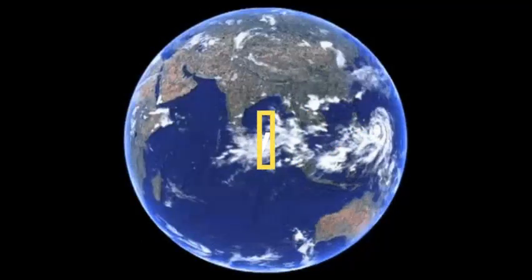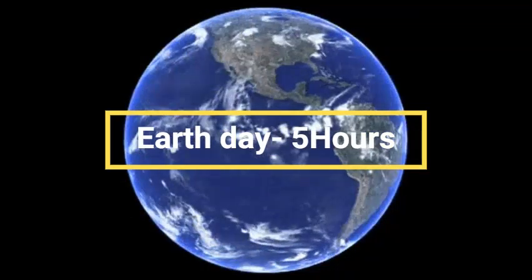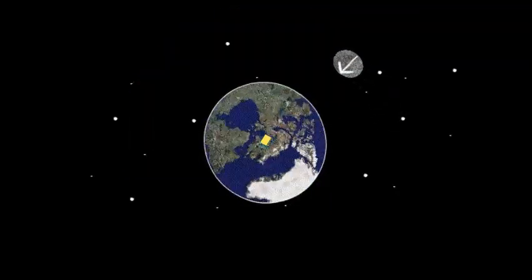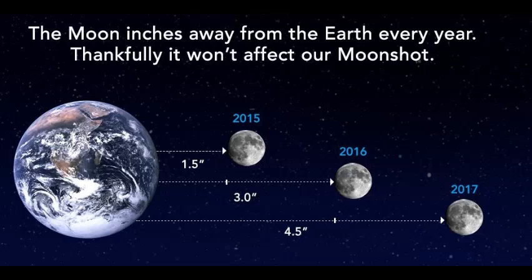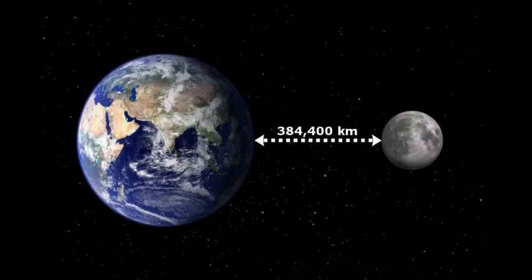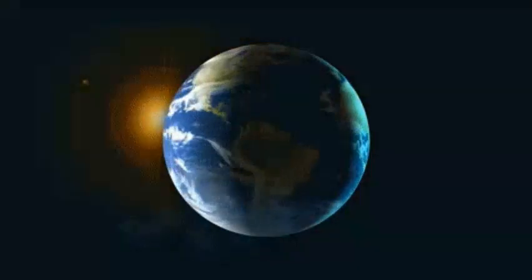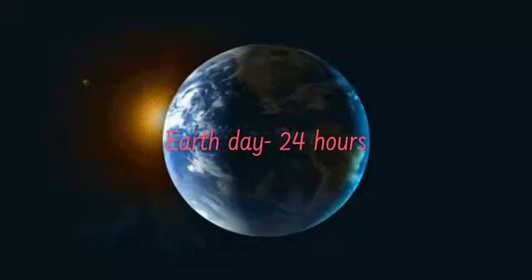The Earth day was only 5 hours long. Since the moon continues to move away from the Earth at the rate of 3.8 cm per year, which causes the Earth's rotation to slow down, the day has increased from 5 hours to 24 hours.